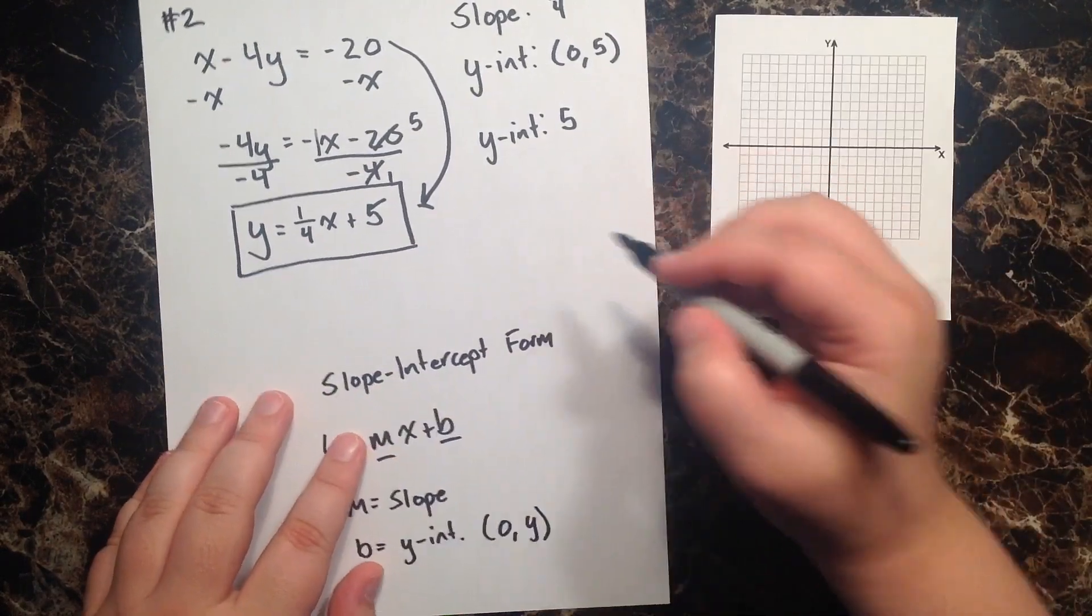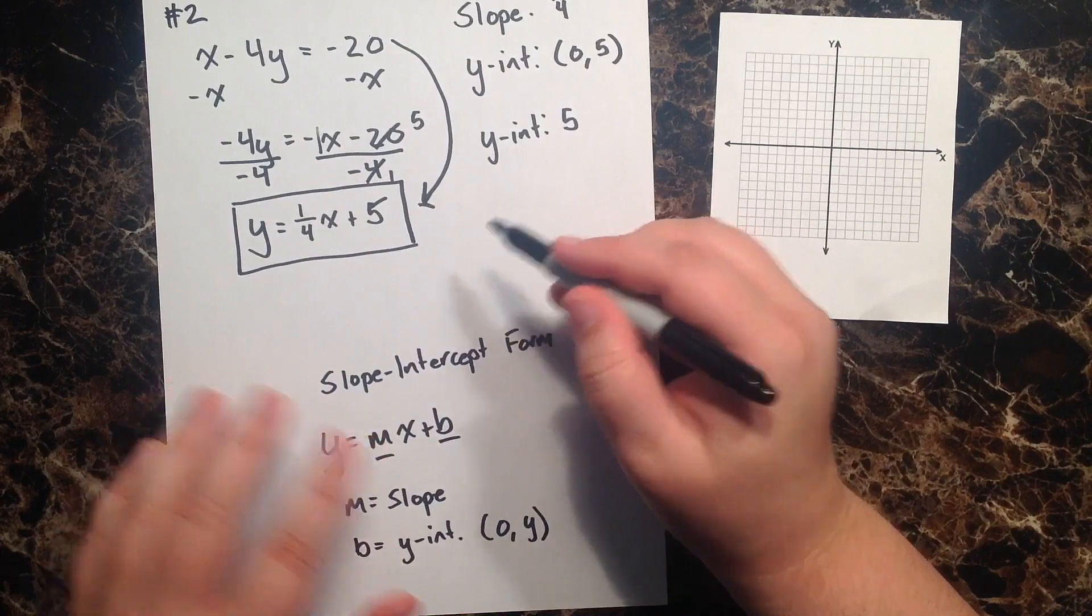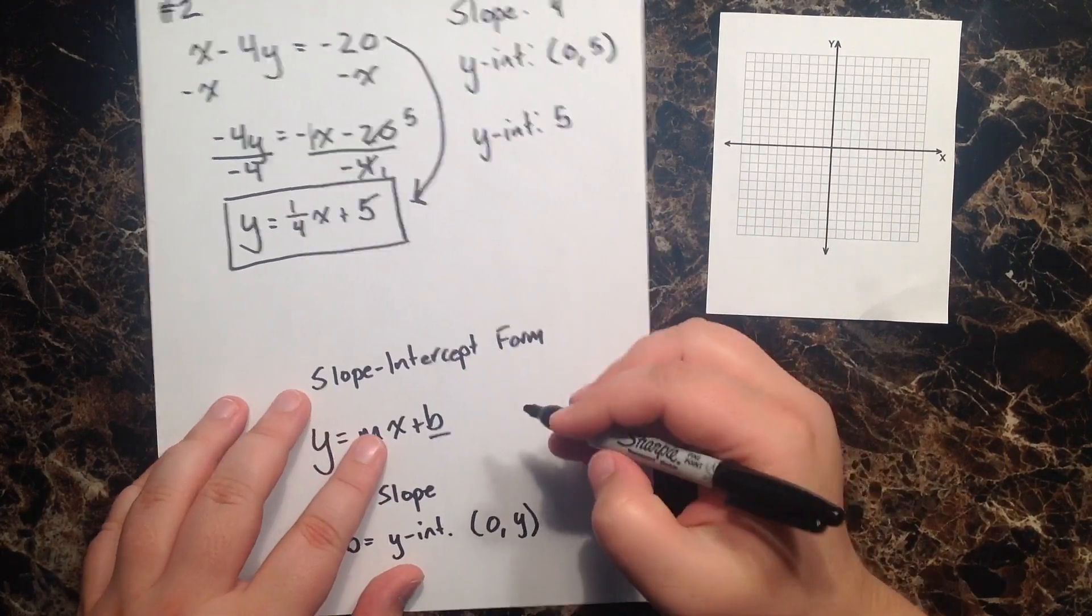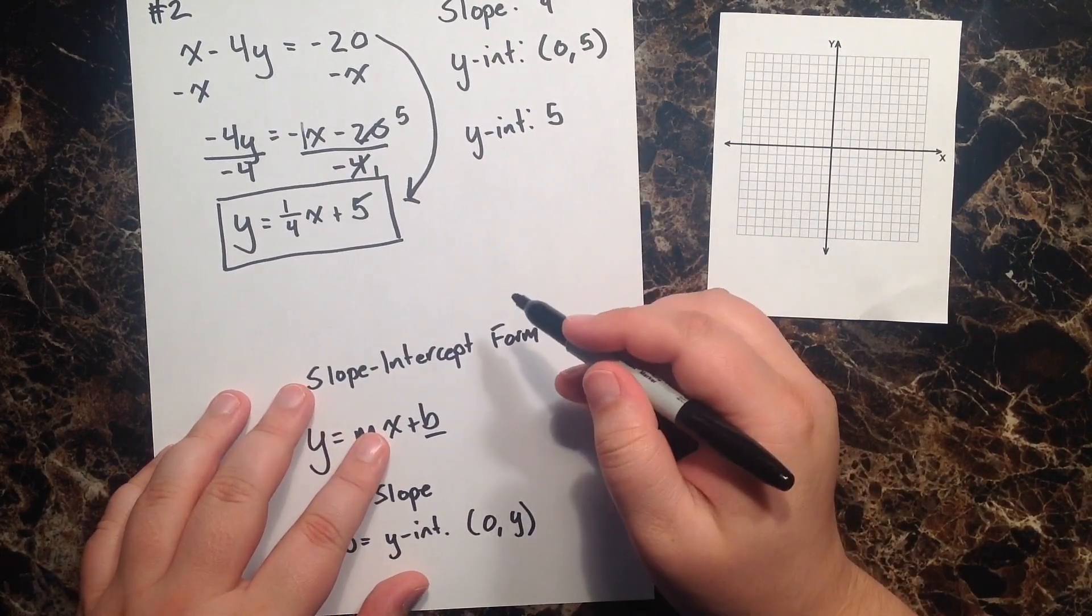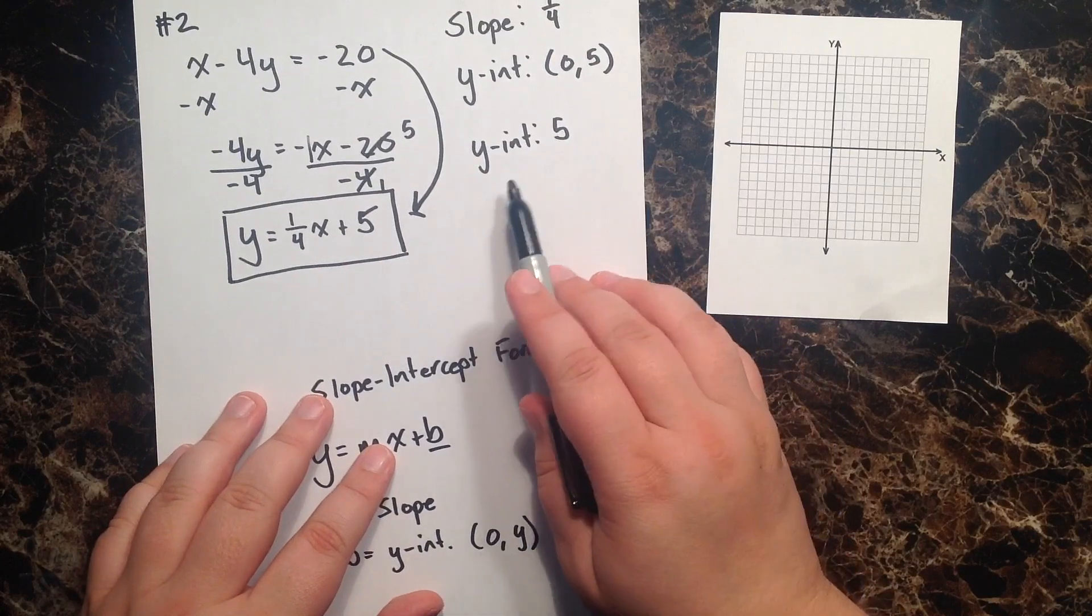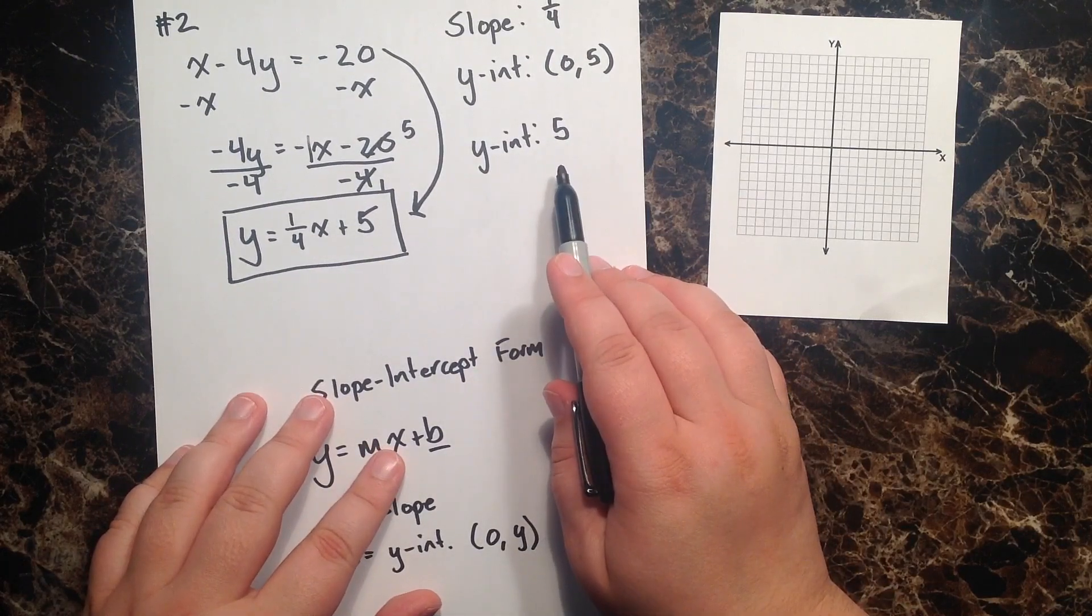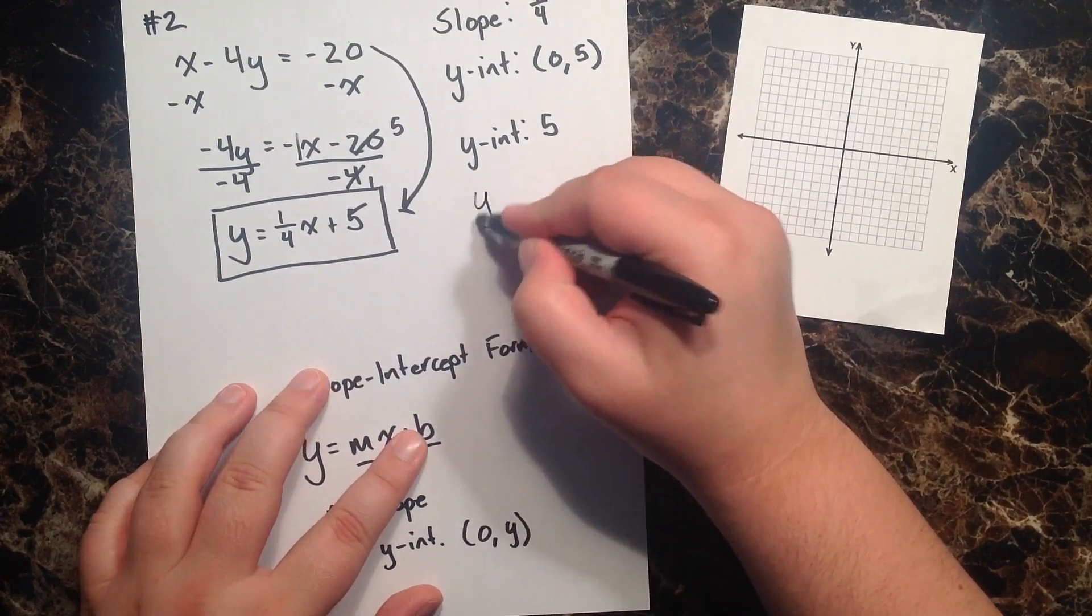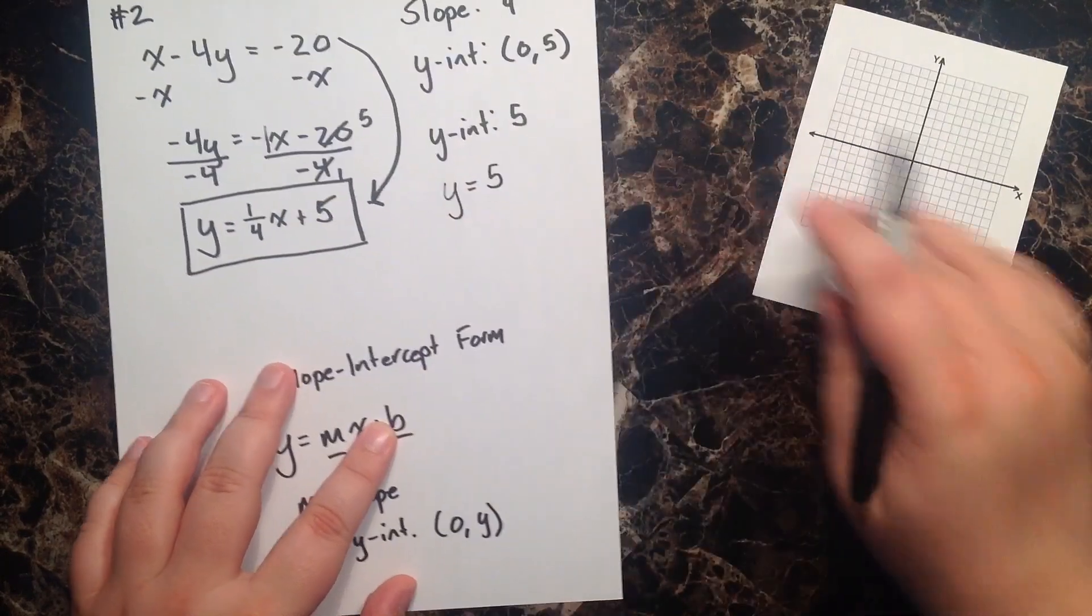A coordinate has to have a 2. It has to have an x and a y value, and so it could be confusing to just say that your x-intercept is 5, because maybe you're trying to say that y equals 5, which is a line.